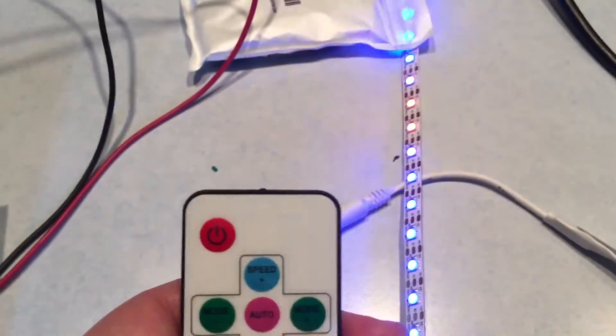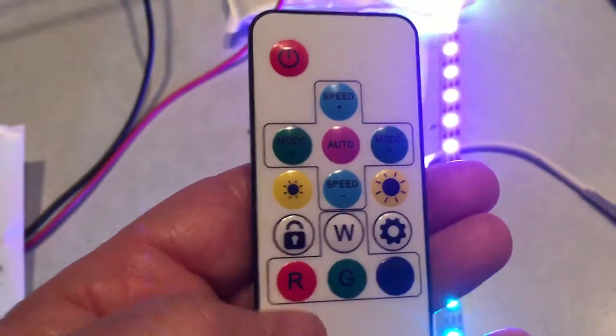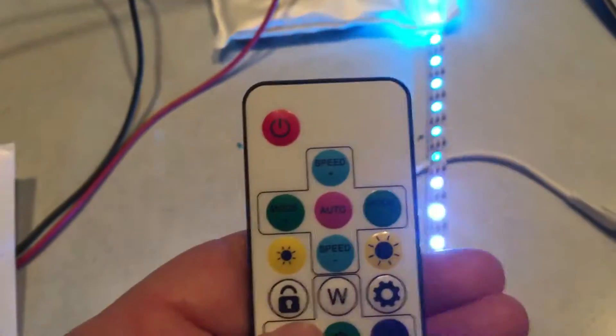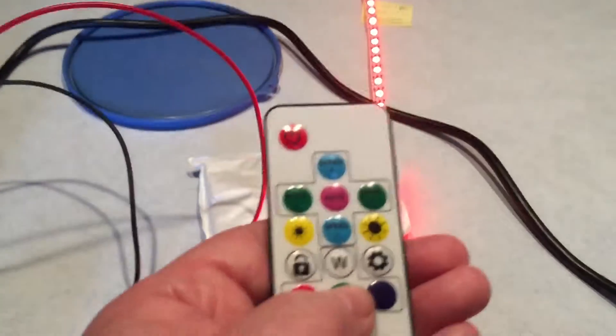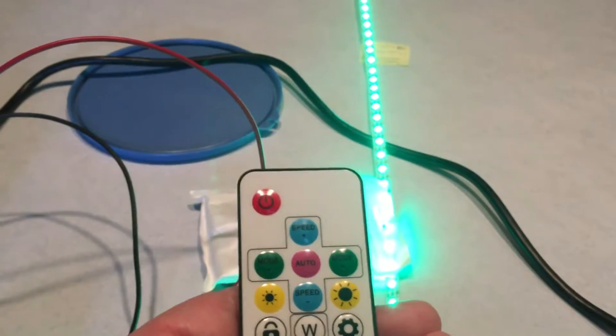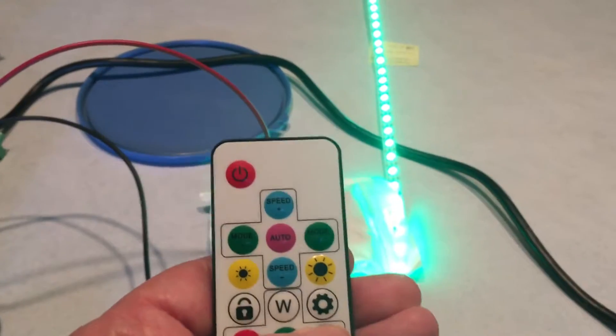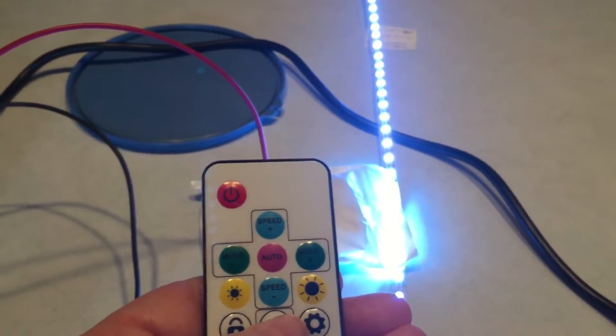There's separate colors, so if you want all red push the red button. If you want all green you push the green button, and if you want all blue you push the blue button. Then there's a white button here if you want all white.